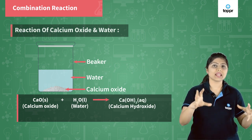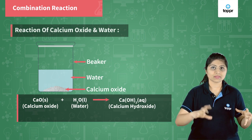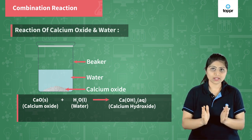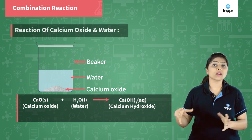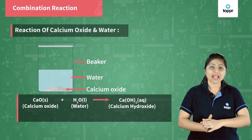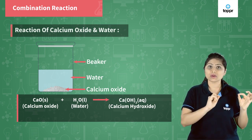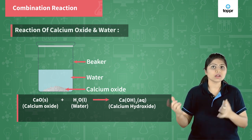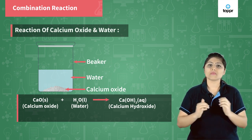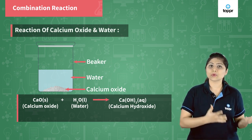Let's write the states of matter. Calcium oxide is a white powder, so it is solid. It is mixed in water, which is liquid. It forms calcium hydroxide, which is dissolved in water, so it is aqueous. In this reaction too, two reactants combine and form a single product.